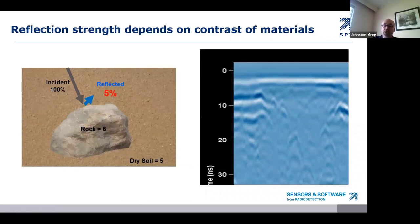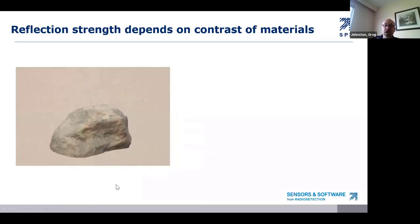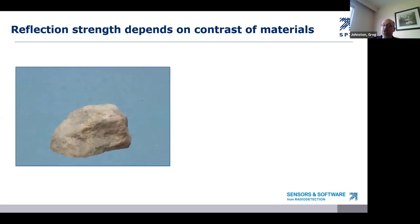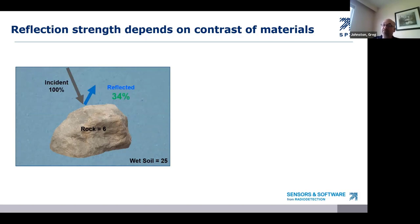Recall that a rock in dry soil only has a reflectivity of 5%. If we add water to the soil, saturating the soil increases the K from 5 to 25. The rock is still at K of 6, and the wet soil is now 25. So the reflectivity of the rock goes from 5% to 34%, making it much more detectable. The implication is important: if you're looking for an object with a low K value — such as a rock or an air-filled object — it becomes more reflective if the soil is water-saturated, because of the larger contrast the water in the soil creates.